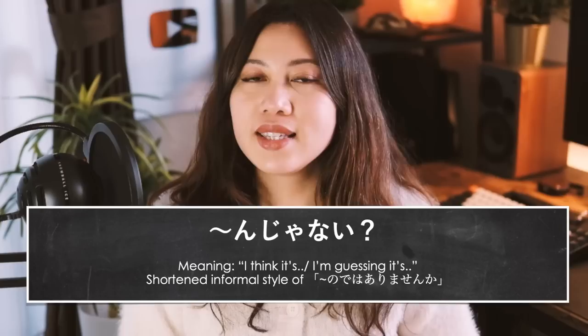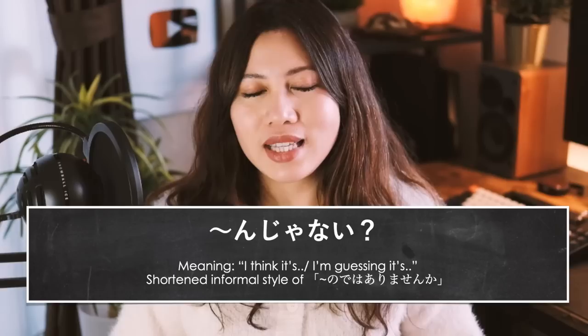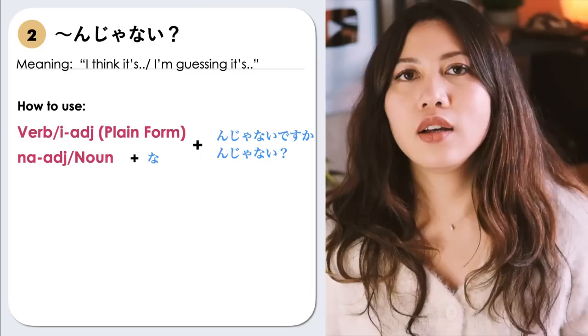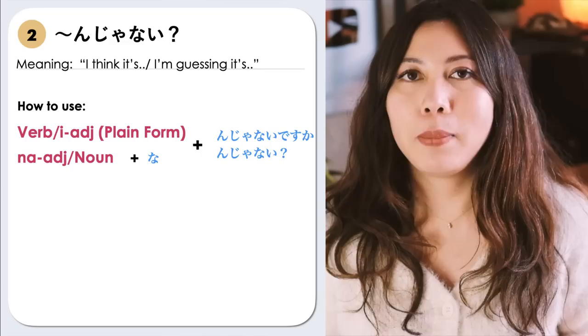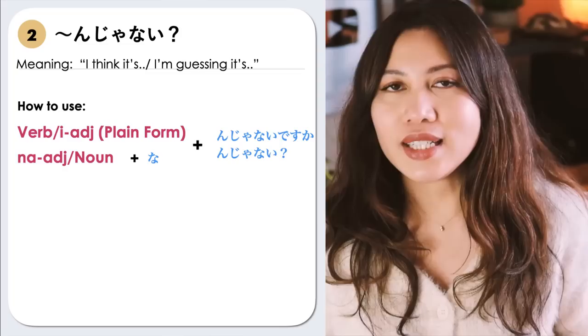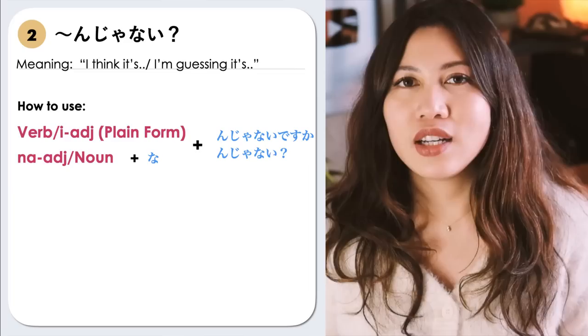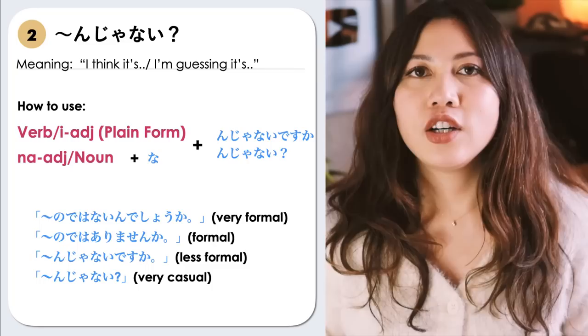Our second grammar pattern is 何々んじゃない / 何々んじゃないですか? This is the shortened informal style of 何々のではありませんか, which means the speaker is expressing what he or she is thinking — basically 'I'm thinking' or 'I'm guessing that.' For verbs and e-adjectives, we use the plain form and then add んじゃないですか or んじゃない. For nouns and na-adjectives, we add na plus んじゃないですか, so it becomes 何々なんじゃないですか?